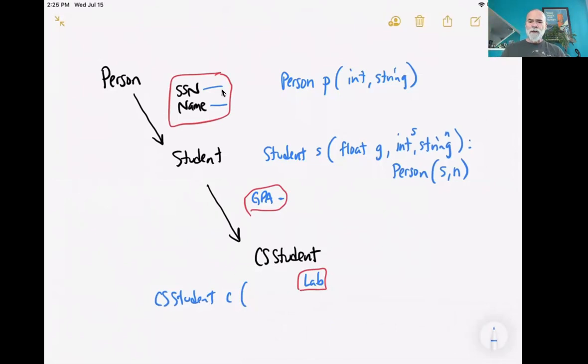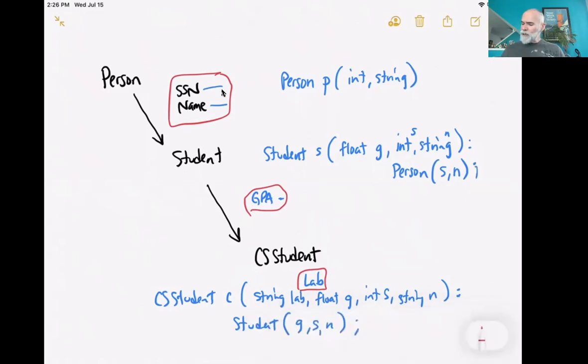But instead, all we do is worry about the level above us. So here in the CS student constructor, we would have a string for the lab. Okay. And then a float for our GPA, an int for our social security number and a string for our name. Now of those CS student itself just cares about lab. That's its only private member variable. Everything else is going to get passed through up to the student constructor. So then here is going to be our student constructor that follows, and we're going to pass along G S and N and those then get tossed up to the student constructor. Now, what's interesting is this student constructor that we pass here that goes up to here now. And when that happens, well then that person constructor gets called also, and the variables just kind of flow naturally into where they should be going.